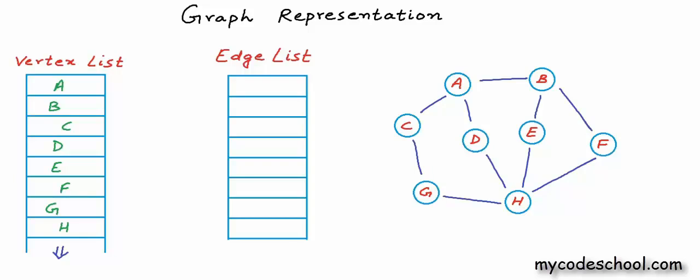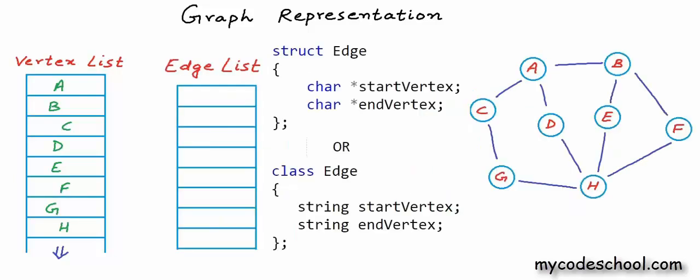Now what should we fill in the edge list? An edge is identified by its two endpoints. So what we can do is create an edge as an object with two fields. We can define edge as a structure or class with one field to store the start vertex and another to store the end vertex.